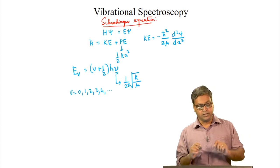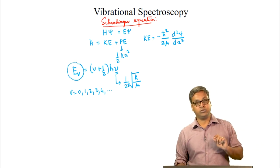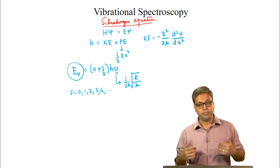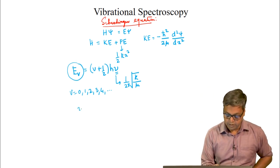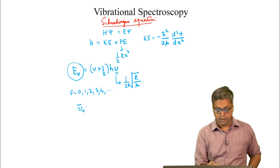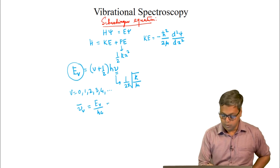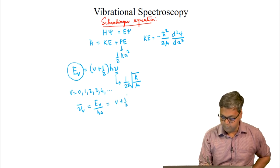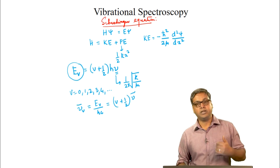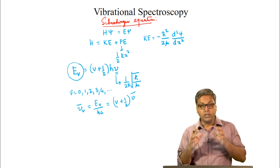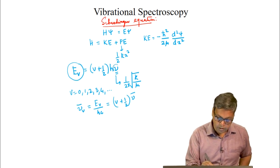The vibrational energy E_v is in joules. To express the vibrational energy in wave numbers, we write nu-bar_v = E_v / hc = (v + half) nu-bar. As we can see, the vibrational energy depends on the reduced mass of the molecule through its dependence on frequency.